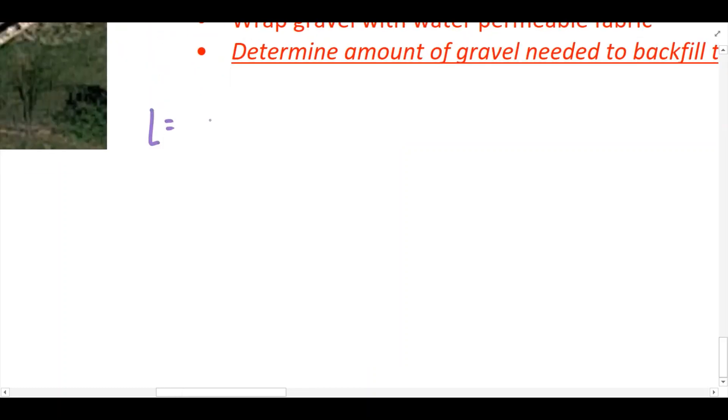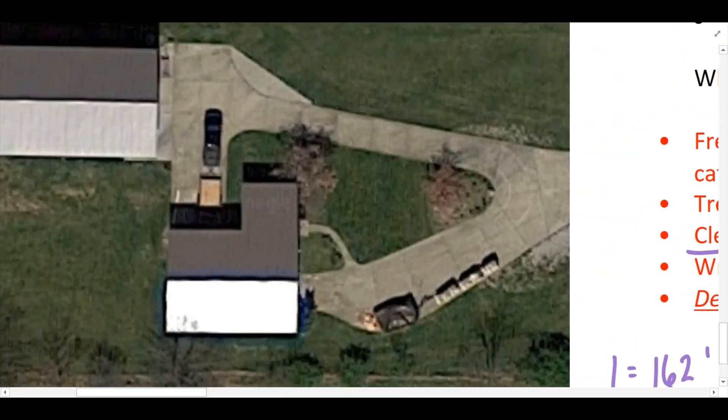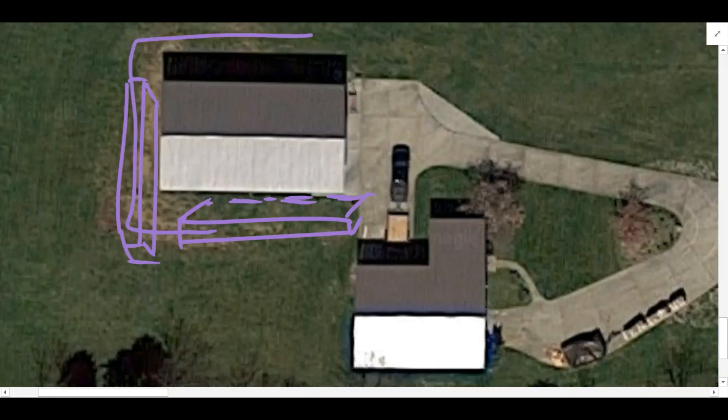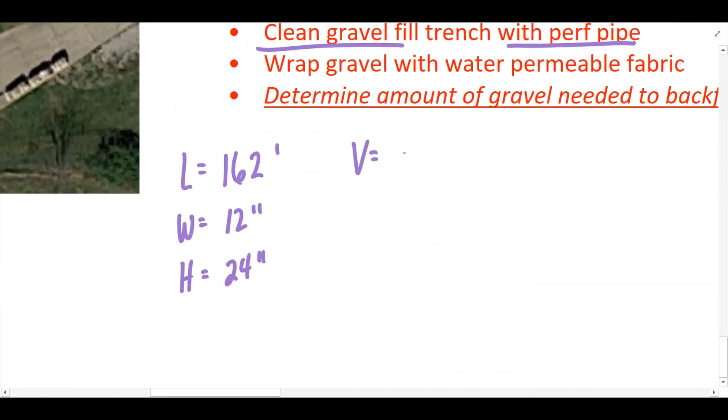We know a couple things. The length of the trench is 162 feet. The width of the trench is 12 inches. And the height or depth of the trench is 24 inches. The volume for this trench—you can imagine, the trench being put into the ground is just a rectangular shape. These are just a bunch of rectangular shapes being dug into the ground and connected. So when it comes to the volume of this trench, all we need to do is take length times width times height. But there's a catch here. The units don't all match, and it's very important that when we calculate volume the units do match.